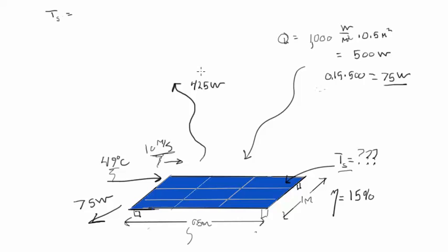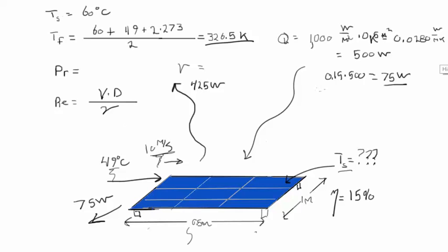First thing we do is assume a film temperature of 60 degrees. Film temperature of 60 degrees plus 49 degrees, we add 2 times 273 to get it in units of Kelvin. My tables are in Kelvin. We get the average of that, an average film temperature of 326.5 degrees Kelvin. From this, as per the flowchart, once we have the film temperature we get the fluid properties. We get the Prandtl number and kinematic viscosity.